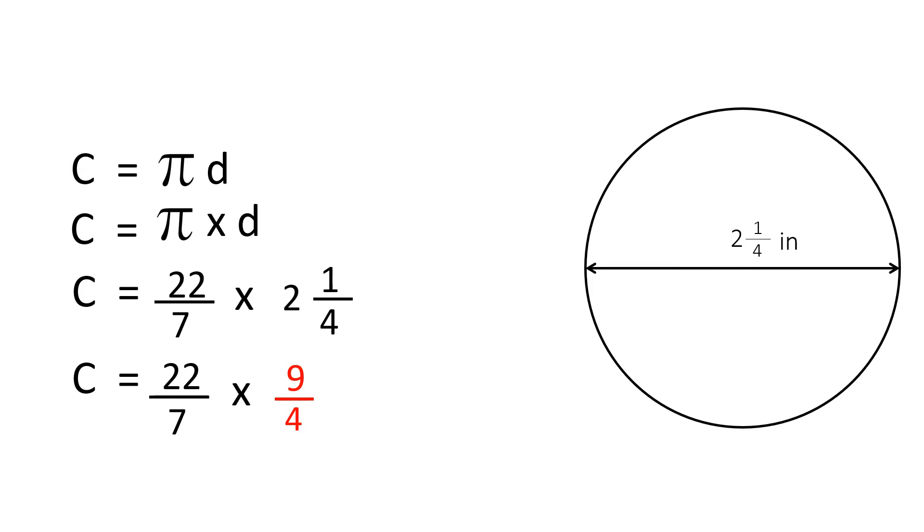We then have to do some cancellations. So, we have a 22 and a 4. The least common multiple or least common denominator will be 2. So, 22 divided by 2 will be 11. 4 divided by 2 will be 2.